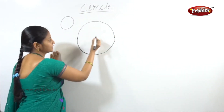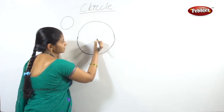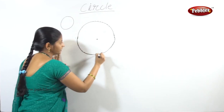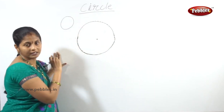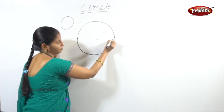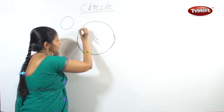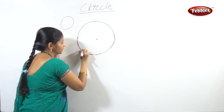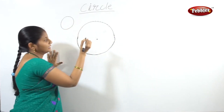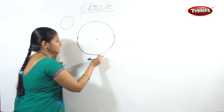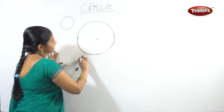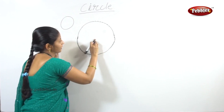That means we have a fixed point and a fixed distance. A circle is a shape that consists of all points in a plane that are at a given distance from a given point.